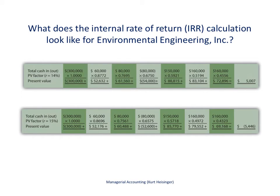Next we need to find the internal rate of return for this proposal. There is a separate video on how to find the internal rate of return, which I recommend reviewing first. This video adds information on how to find the internal rate of return for a service company that has uneven cash flows. To find the internal rate of return, we need to find the rate that gives us a net present value as close to zero as possible. At 14%, the net present value is a positive $5,007.